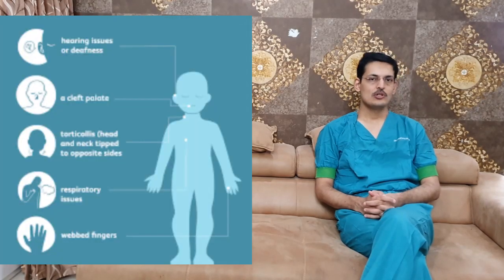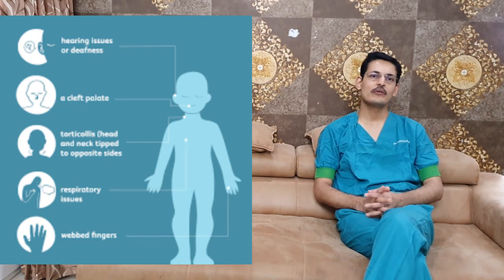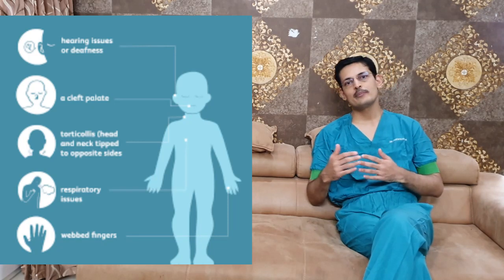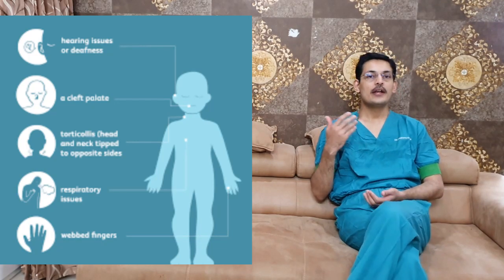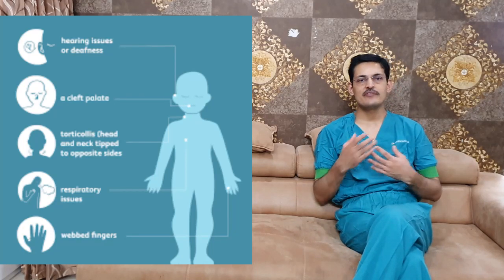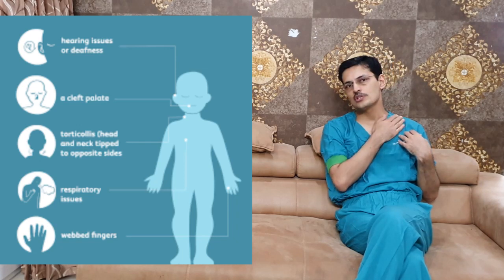There are other congenital abnormalities associated with Sprengel's shoulder. About one third of patients with Klippel-Feil syndrome have a Sprengel's shoulder. It is also associated with scoliosis, rib abnormalities, cleft palate, and clavicular abnormalities. These patients are usually part of a spectrum of congenital disorders which present as Sprengel's shoulder.